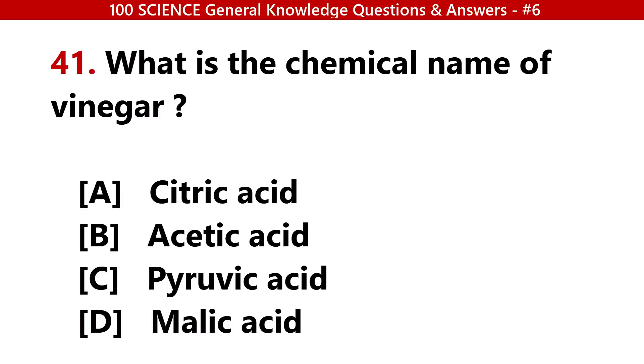What is the chemical name of vinegar? Answer B: Acetic acid.